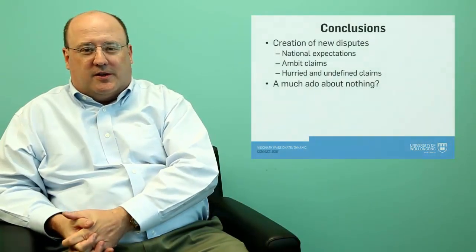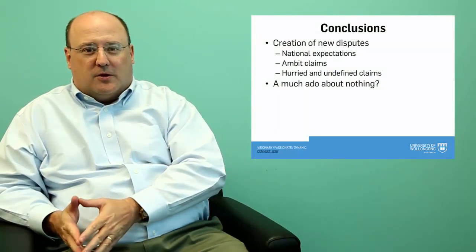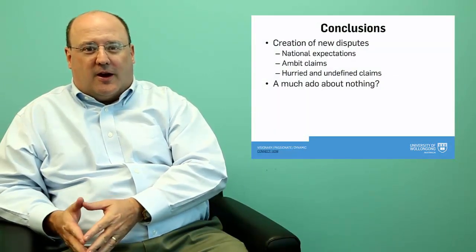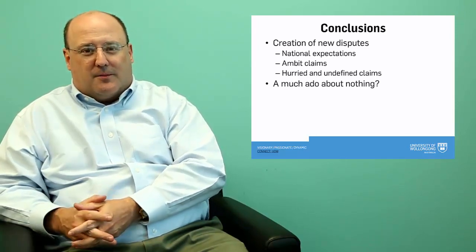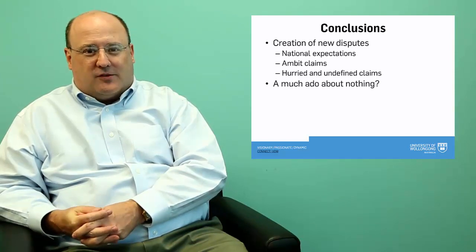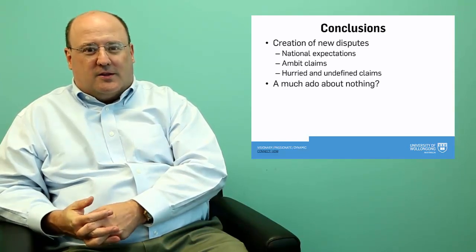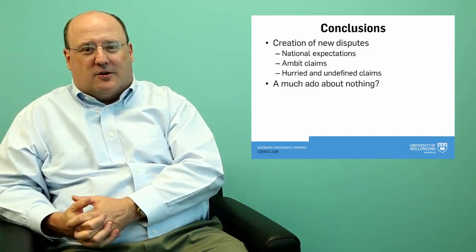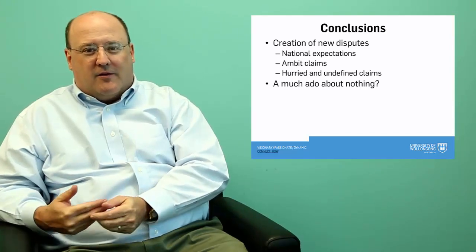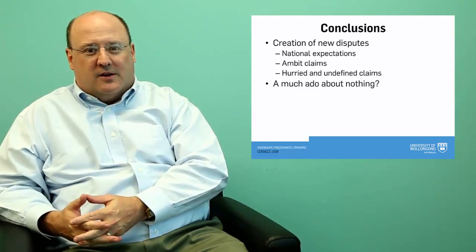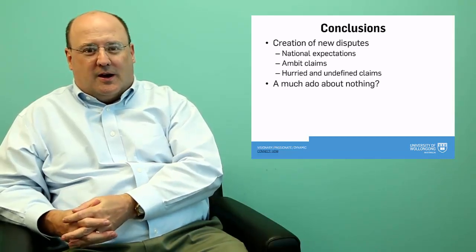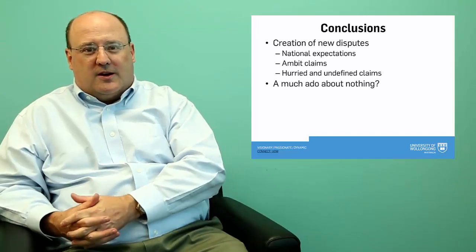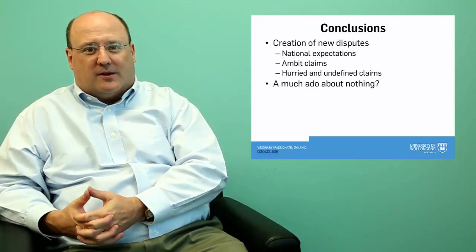In conclusion, the extended continental shelf regime has given rise to a whole range of new disputes, or at least has exaggerated a number of old ones. It's fair to say that relations between China and Japan, for example, haven't been marvelous for much of the last half century, but certainly the Chinese preliminary information launched in 2009 marked the start of an upswing of poor relations. And this can be seen in a number of contexts throughout the Asian region and in the broader Pacific and wider world. The extended shelf has sought to exaggerate these problems.